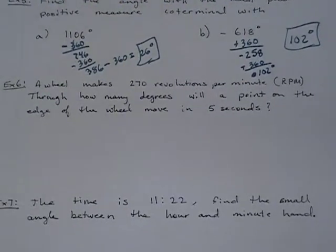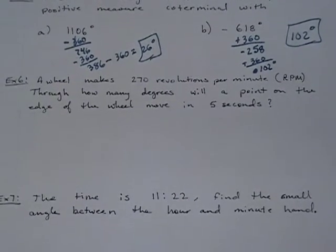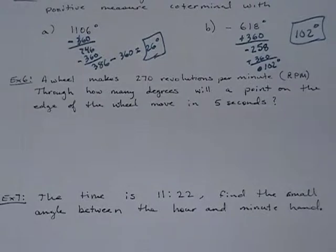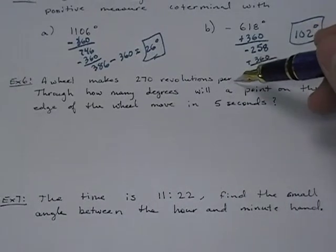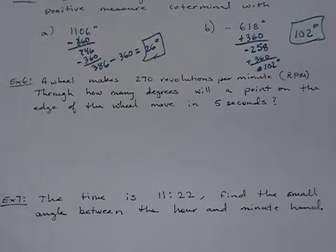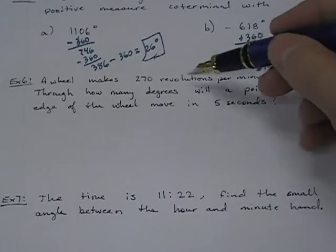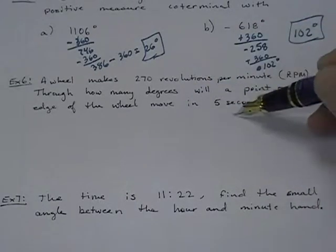Another problem: a wheel makes 270 revolutions per minute. Through how many degrees will a point on the edge of the wheel move in five seconds? One revolution or one full turn is 360 degrees. So what I really need to know is how many revolutions this wheel will make in five seconds. They gave me revolutions per minute, so I need to convert.